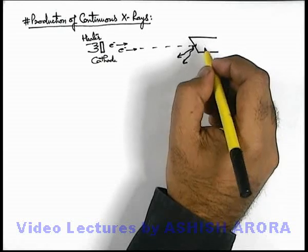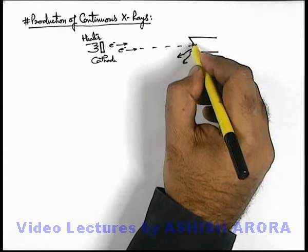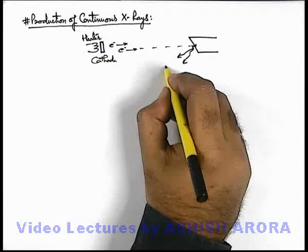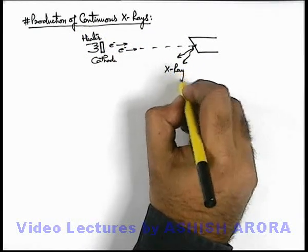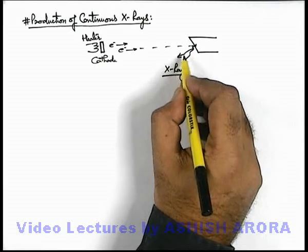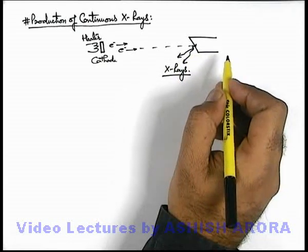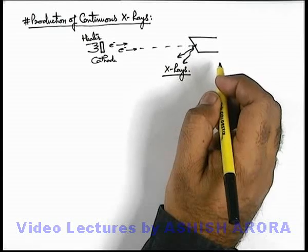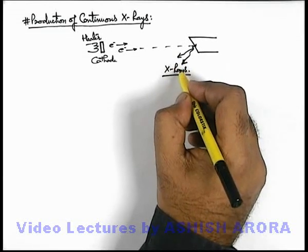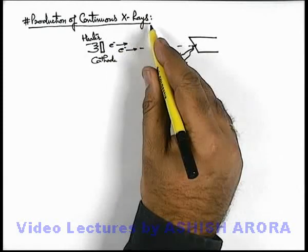Now we are going to discuss about the production mechanism of continuous x-rays. These are called continuous x-rays because the x-rays emitted from the cathode have a wavelength range varying from a minimum value to very high values, and as all wavelengths are present the spectrum of these x-rays is continuous and hence these are called continuous x-rays.